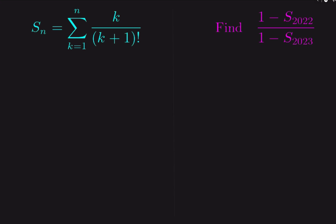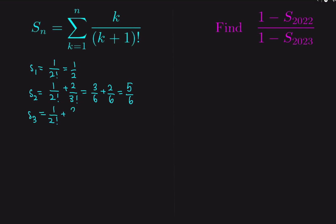To start off, let's look at a few small values of S to see if we can find a pattern. S of 1 is 1 over 2 factorial, which is 1/2. S of 2 is 1 over 2 factorial plus 2 over 3 factorial, which is 3/6 plus 2/6, giving 5/6. S of 3 is 1 over 2 factorial plus 2 over 3 factorial plus 3 over 4 factorial, which is 12/24 plus 8/24 plus 3/24, giving 23/24.